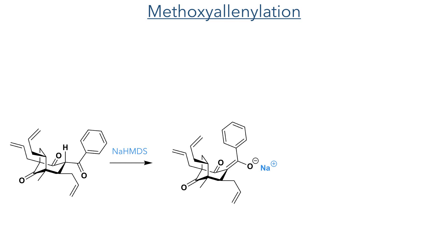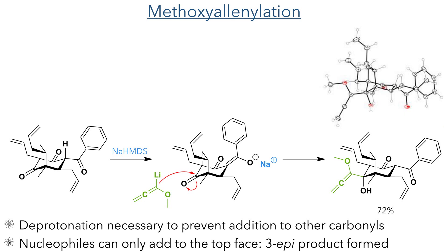With this compound in hand they then undertook the methoxyalene alkylation. In order to obtain selectivity for the target carbonyl group, they first reacted the molecule with sodium HMDS. This deprotonated the most acidic proton, which is alpha to the two other carbonyl groups present. This deprotonation reduces the electrophilicity of these two positions and ensures reactivity at the target site. They then reacted the molecule with methoxyalene lithium, which successfully attacked the target carbonyl and produced the product in a 72% yield.